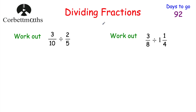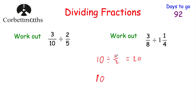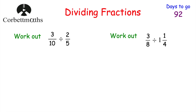So we've had a look at multiplying fractions. Now let's look at dividing by a fraction. If we had 3 tenths divided by 2 fifths, instead of dividing by 2 fifths, what we do is multiply by the reciprocal. The reason is — if we had 10 divided by a half, that's asking how many halves are there in 10. If we had 10 wholes, there'd be 20 halves. That's the same as 10 multiplied by the reciprocal of a half, which is 2, and 10 times 2 equals 20. So to divide by a fraction, you can multiply by the reciprocal instead.